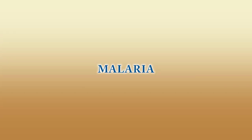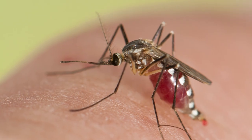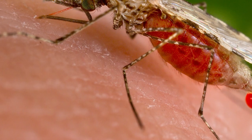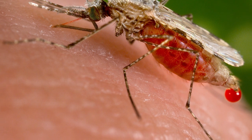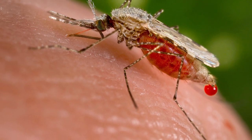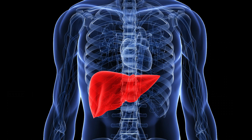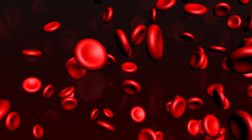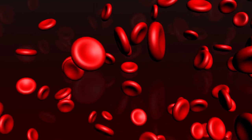We will now look into diseases spread through insects. Malaria is a life-threatening blood disease caused by parasites transmitted to humans through the bite of the Anopheles mosquito. Once an infected mosquito bites a human and transmits the parasites, those parasites multiply in the host's liver before infecting and destroying red blood cells.